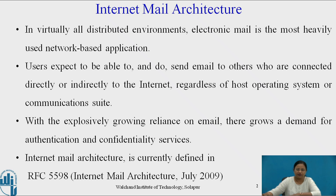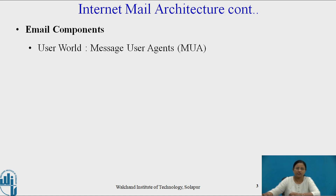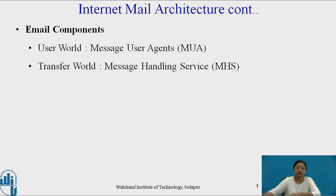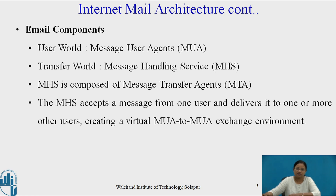The internet mail architecture is currently defined in RFC 5598 as 'Internet Mail Architecture' in July 2009. There are different email components present in internet mail architecture. First is the user world, in the form of a message user agent. Second is the transfer world, in the form of a message handling service, which is composed of message transfer agents. The message handling service accepts a message from one user and delivers it to one or more other users.